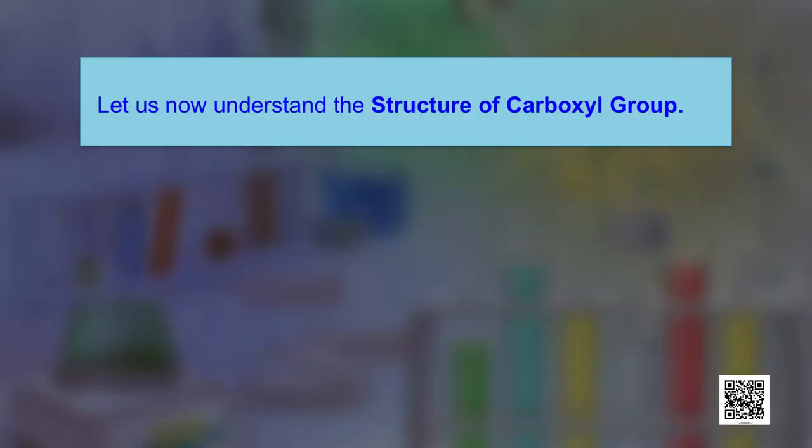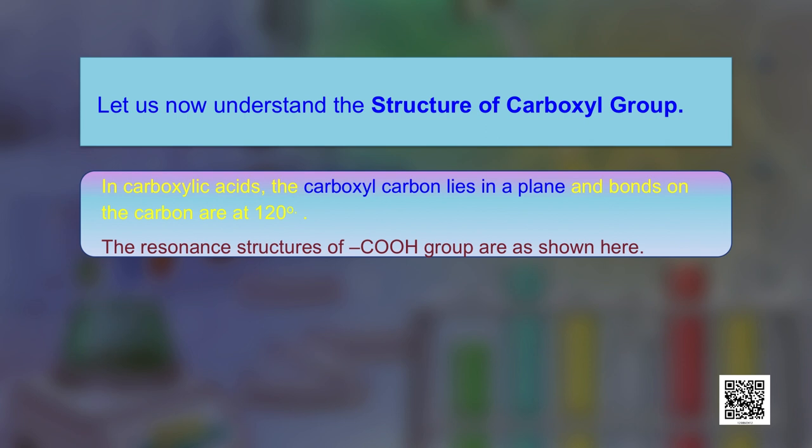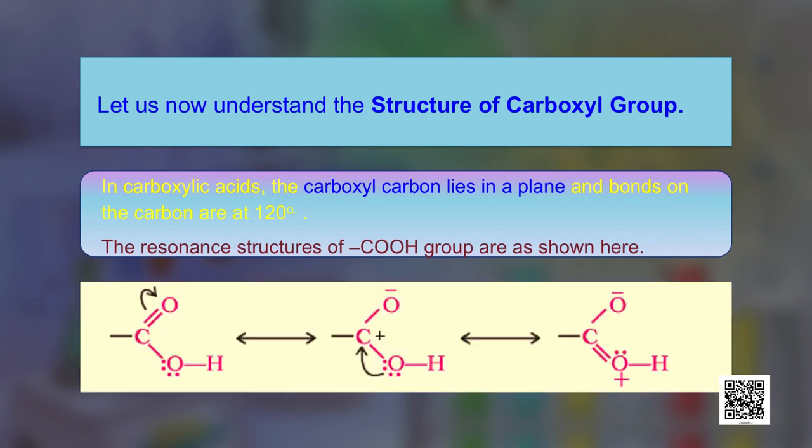After understanding the nomenclature of carboxylic acids, let us now see the structure of the carboxyl group. In carboxylic acids, the carboxyl carbon lies in a plane and the bonds on the carbon are at 120 degrees. The resonance structures of the COOH group are as shown here.